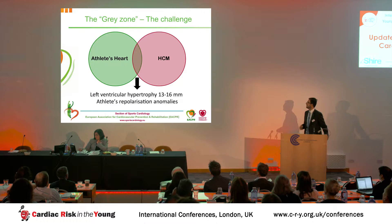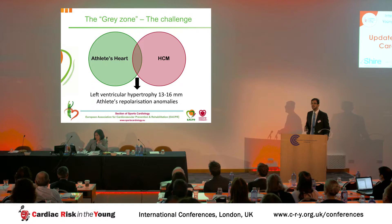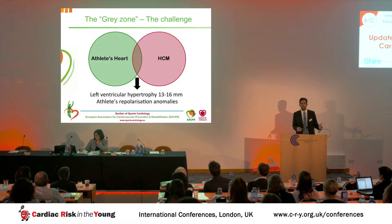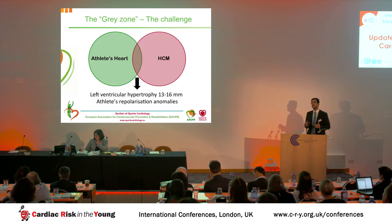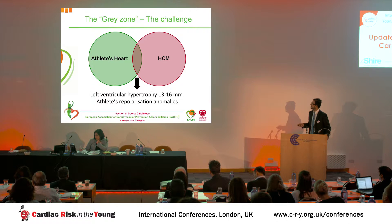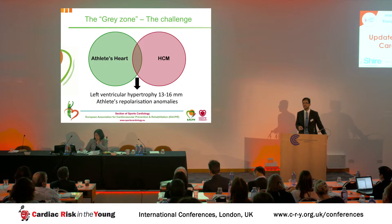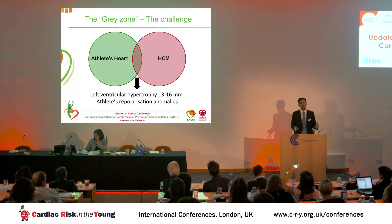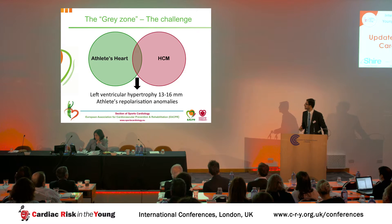Our gray zone will be predominantly athletic individuals who have a wall thickness over 12 mm and up to 16 mm — I'll explain in a moment why 16 mm — and those athletic individuals who have repolarization anomalies. Obviously, the more challenging cases are those who combine both features.